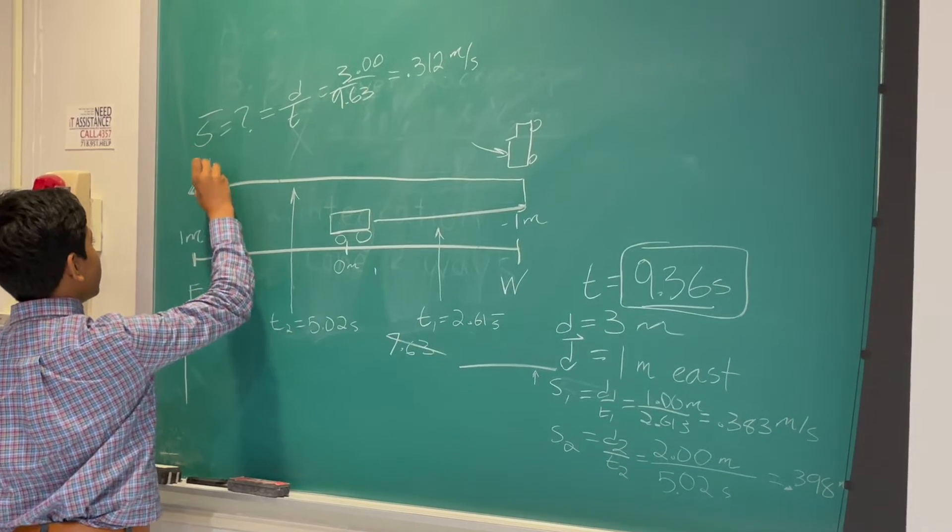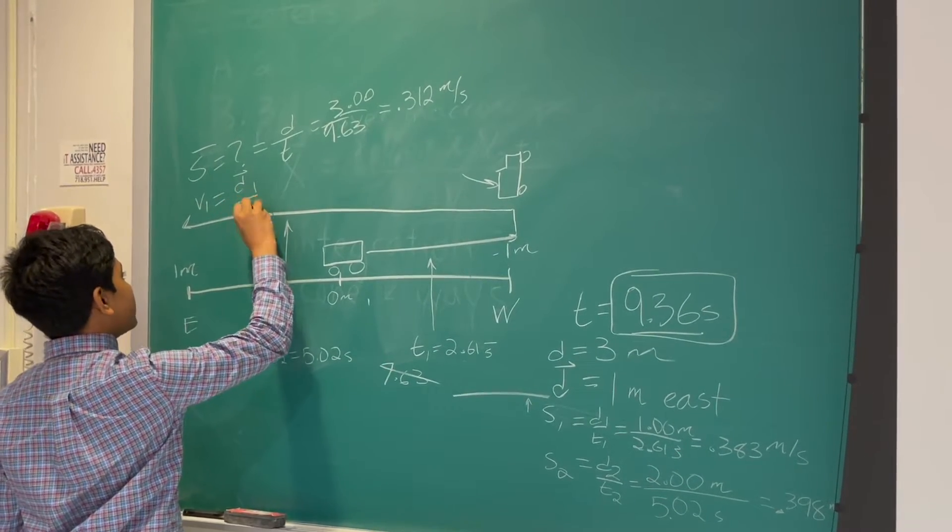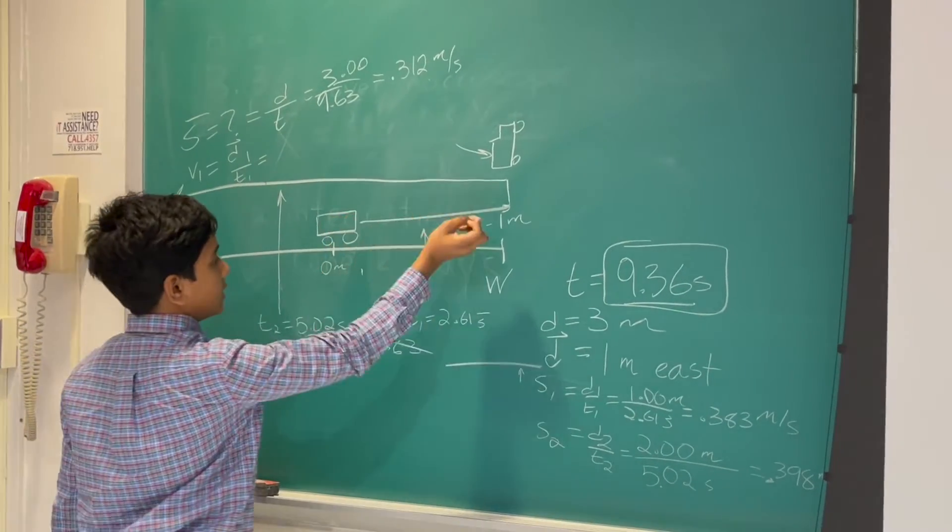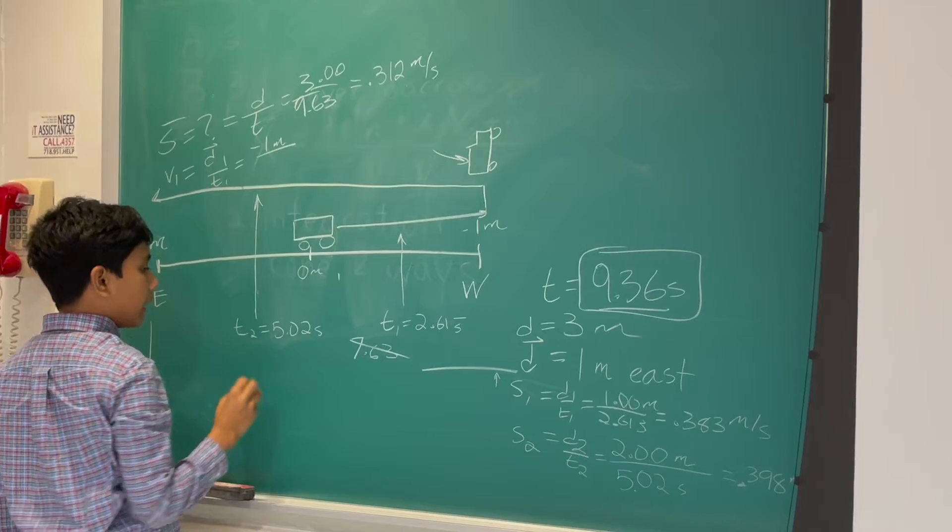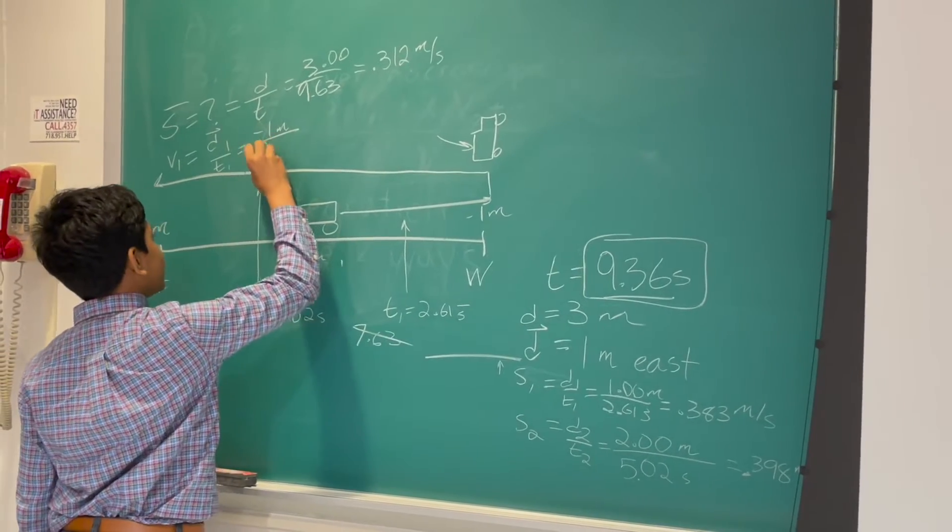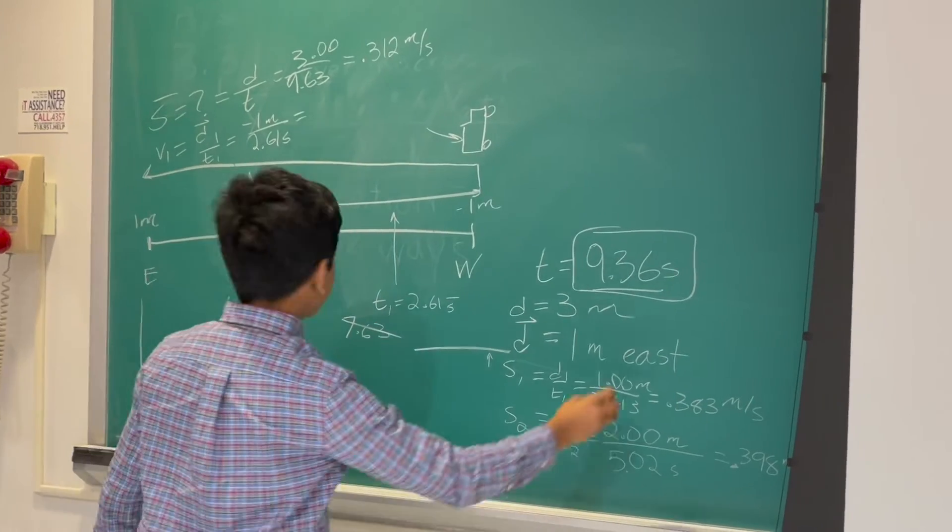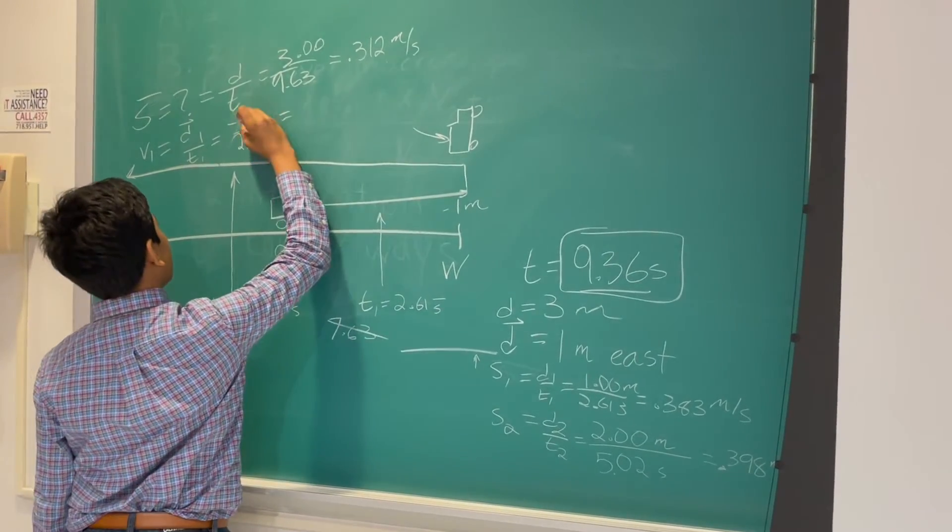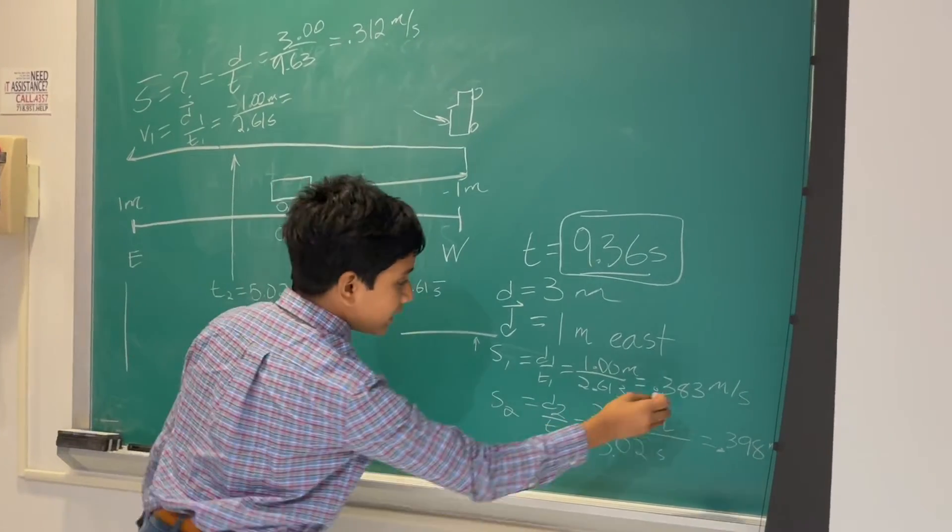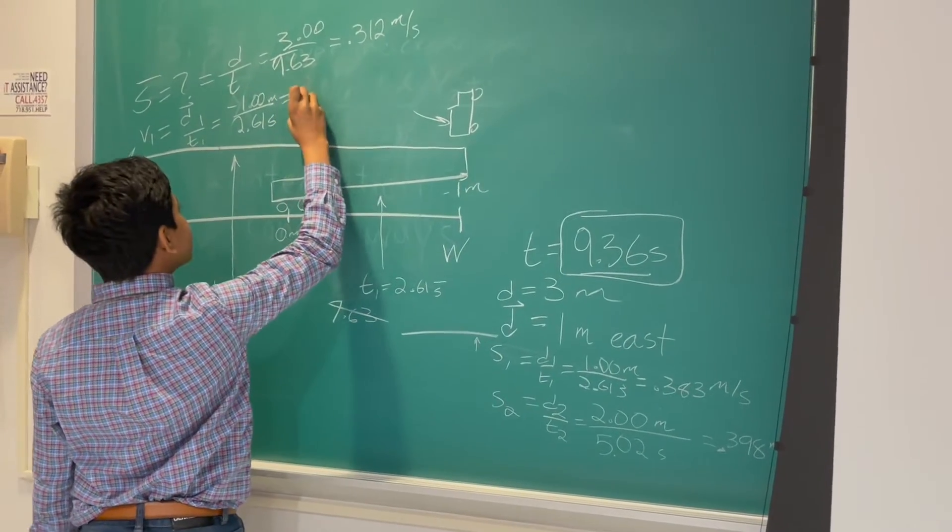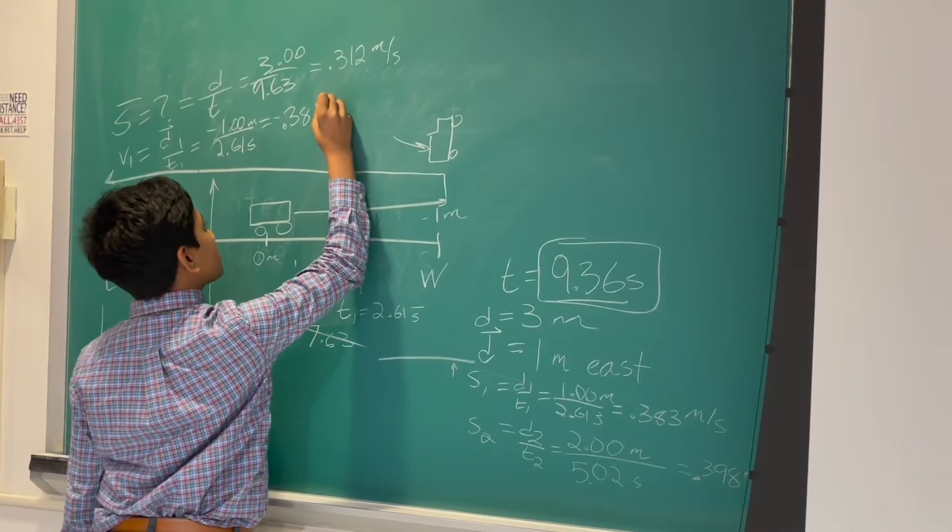Let's find V1. That's equal to displacement 1 divided by T1, which is minus 1 meter, or 1 meter west, divided by 2.61 seconds. And, as you can guess, that's simply the negated version of this. So, minus 0.383 meters per second.